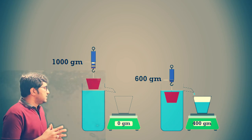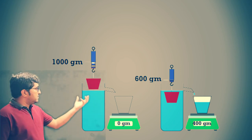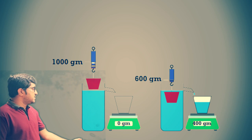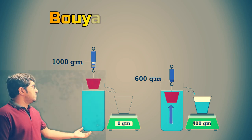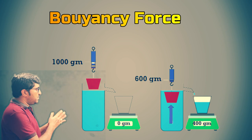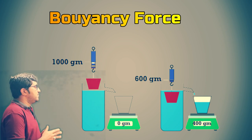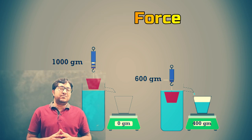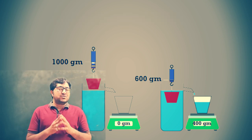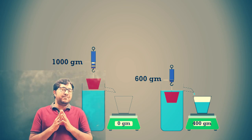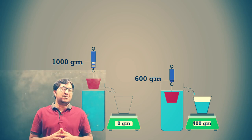So buoyancy force means when an object is submerged in liquid, the liquid exerts an upward force, and due to this upward force the loss in weight is 400 grams. The floating and sinking of a body depends on the density of the object and the density of the fluid.